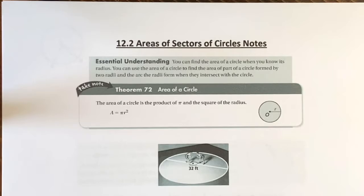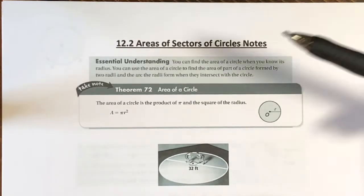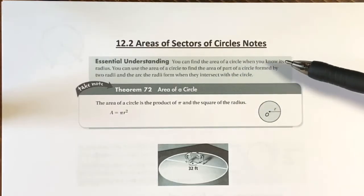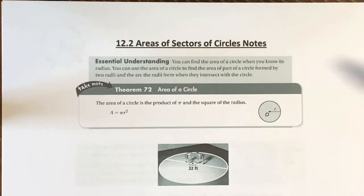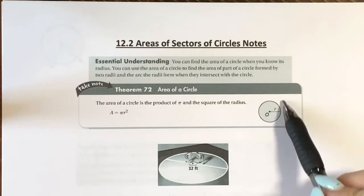Hello! Today we are going to do section 12.12, which is talking about areas of sectors of circles. So before we learn how to find the area of a sector, let's review how to find the area of an entire circle. You can find the area of a circle when you know its radius or its diameter, and you can use that to find the area of part of the circle formed by two radii. But first let's just practice finding the area of an entire circle.